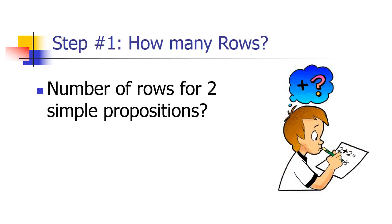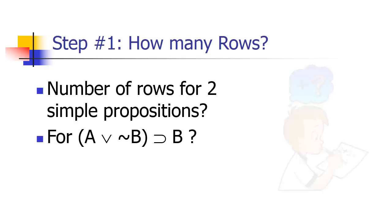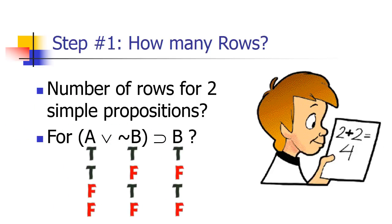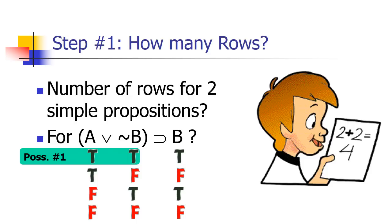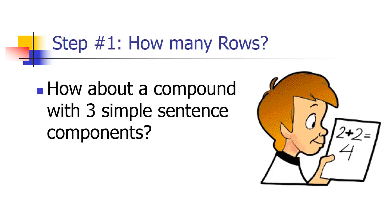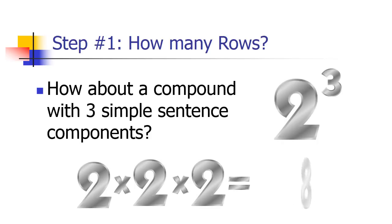For example, how many rows for two simple propositions in a compound like A wedge tilde B horseshoe B? The answer is four possible combinations, because 2 to the second power is 4: A true and B true, A true and B false, A false and B true, or both false. For three simple sentence components, 2 to the third power equals 2 times 2 times 2, which equals 8. So you can see how this adds up.